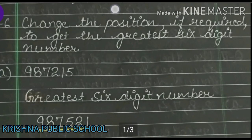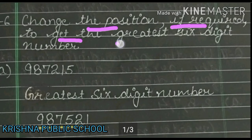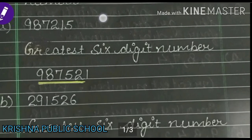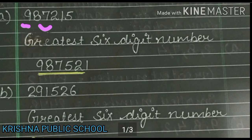Question number 6. We see question number 6: Change the position if required to get the greatest 6-digit number. Now we see part number A. We are given 9,87,215.